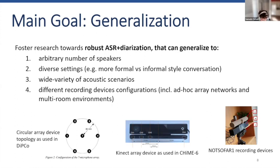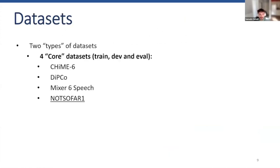This is very different, for example, from task two. We want participants to produce systems that can adapt themselves and are agnostic to the array configuration. This includes ad hoc array networks and multi-room environments like CHiME 6. The datasets this year are four — the same three as last year, with some changes like Mixer 6 Speech, where we re-annotated manually the development set, and we added the not-so-far-one dataset, which we share with task two.